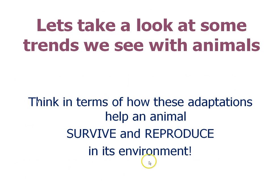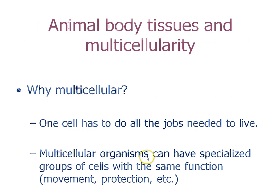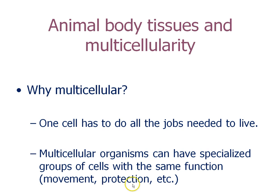Let's look at some trends that help animals survive and reproduce, especially on land. Why multicellular? One cell has to do all jobs to keep itself alive, but if you're multicellular, you can have specialized groups of cells for different functions. For example, we have muscle cells for movement, white blood cells for protection, and nerve cells for conducting impulses — all different tissues that keep the whole organism alive.